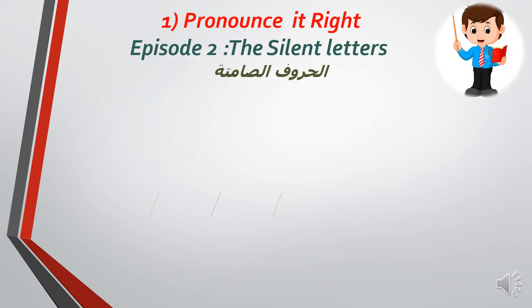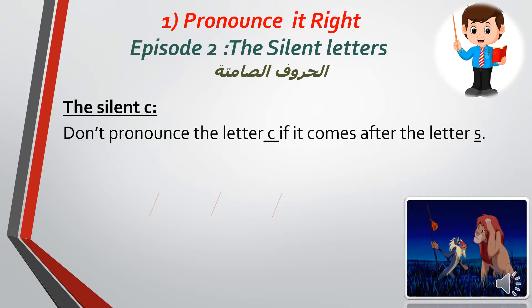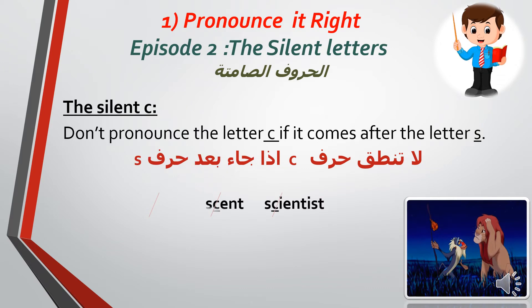Pronounce It Right, Episode 2: The Silent Letters — الحروف الصامتة. In the last episode we covered the silent B and learned when the letter B is silent. Today we'll continue with the letter C and the letter D, and we'll learn when these two letters are silent in a word. Our rule: don't pronounce the C letter if it comes after the letter S.